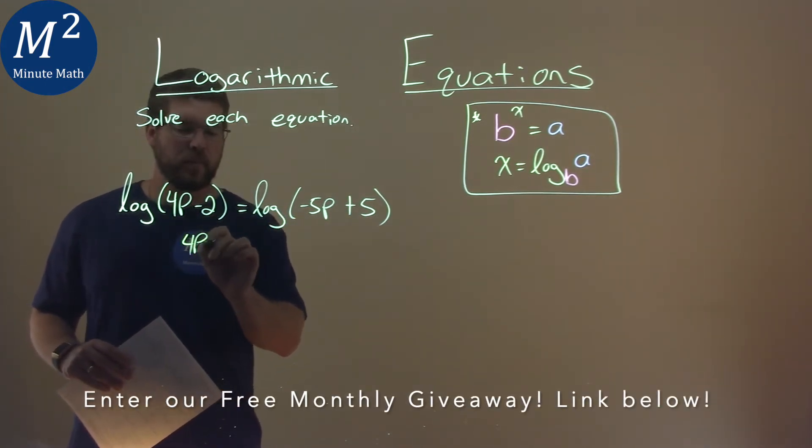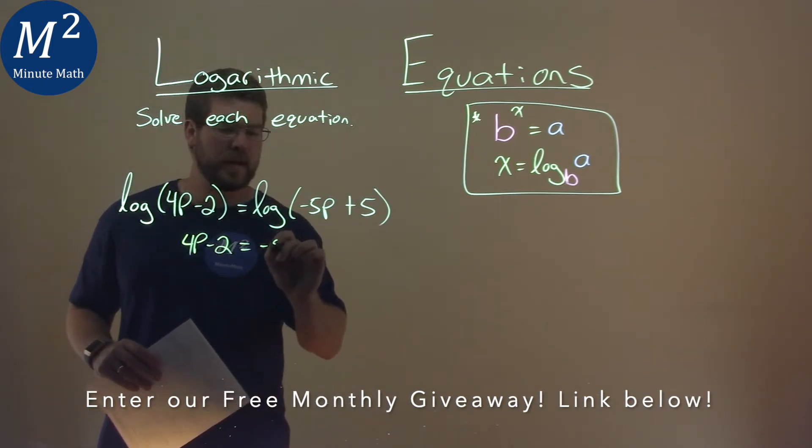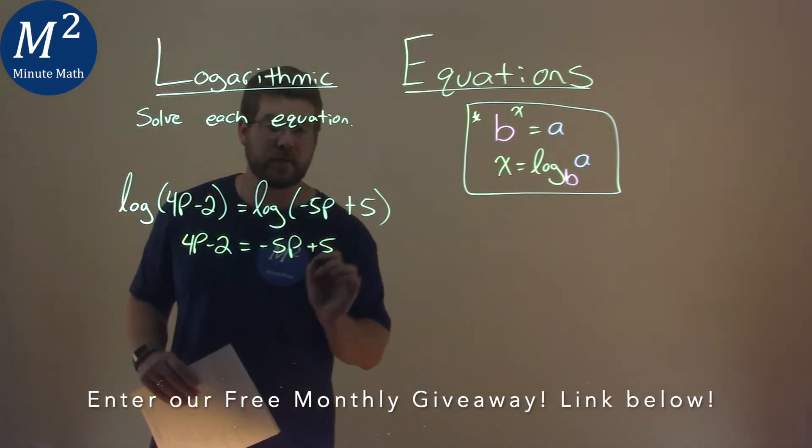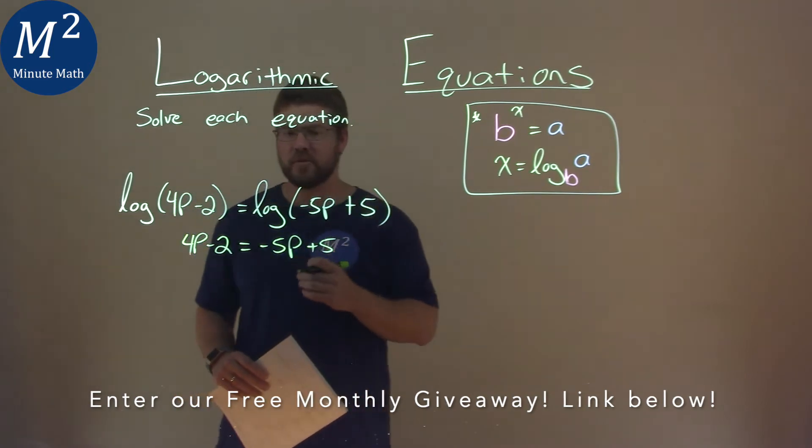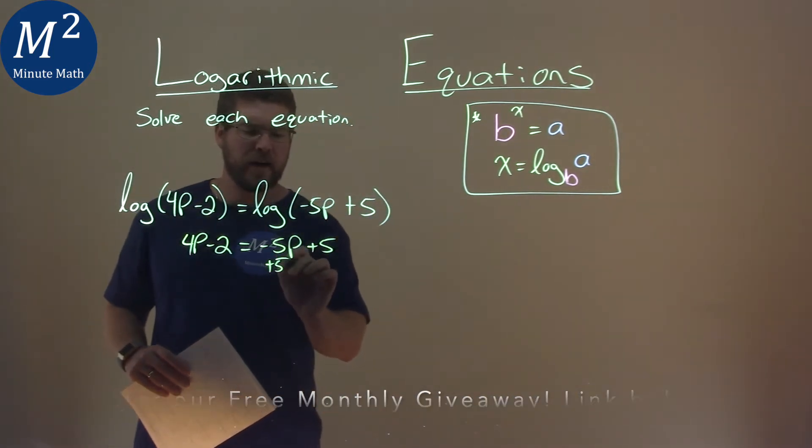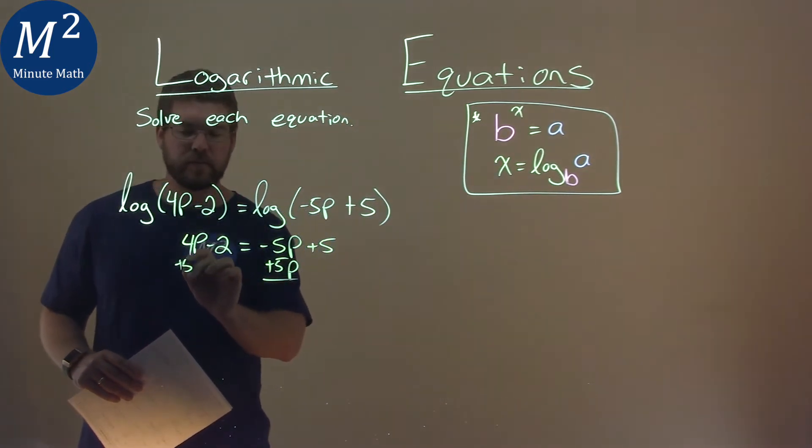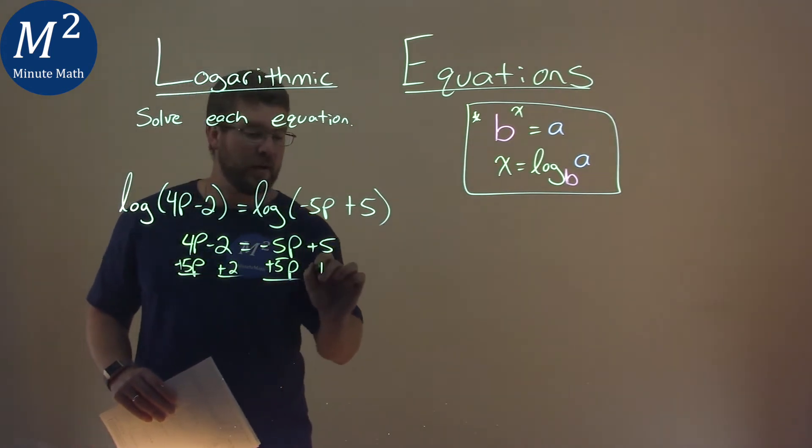So we have 4p minus 2 is equal to negative 5p plus 5. Now this is so much easier to solve. I add 5p to both sides, and I add 2 as well.